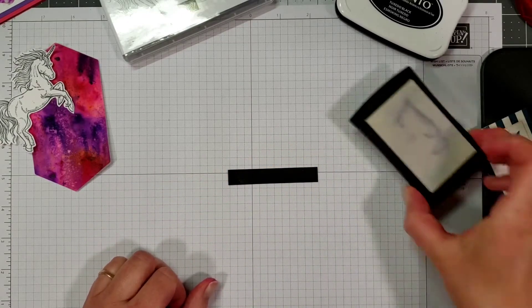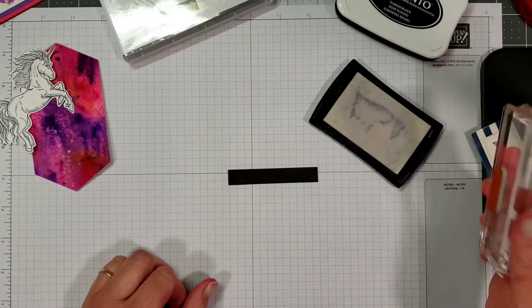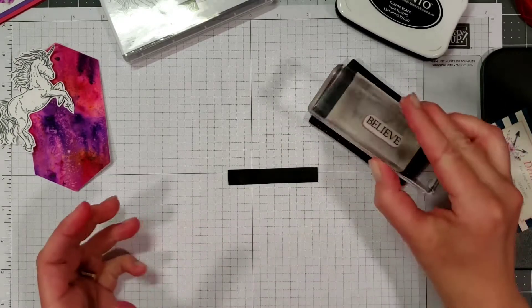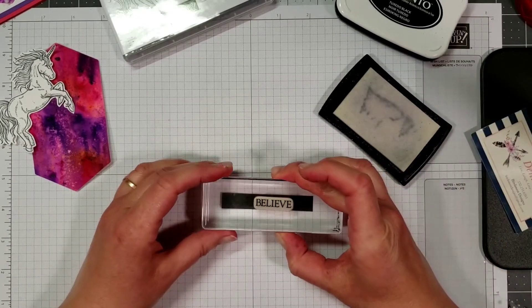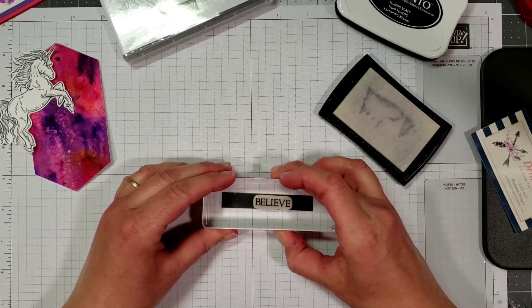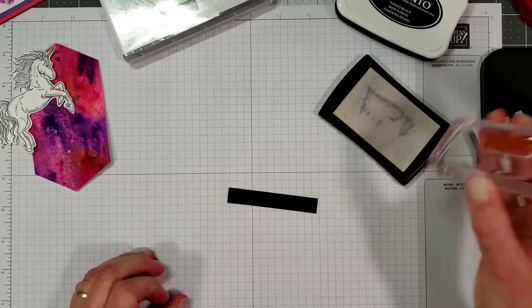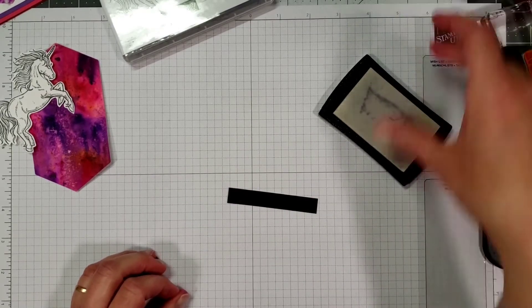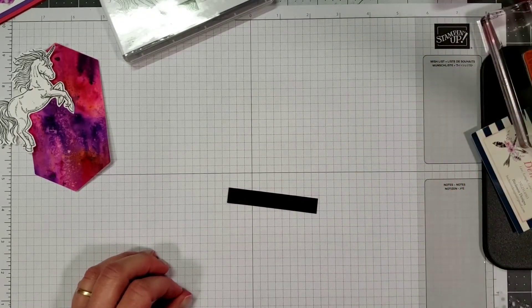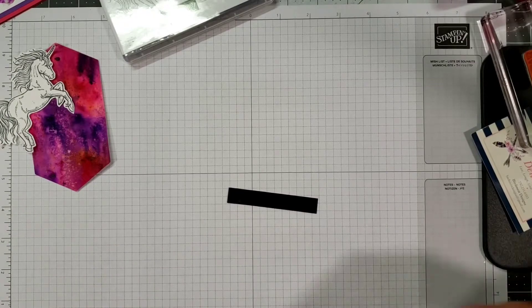Versa mark ink pad and then I'm going to bring in my embossing tray here with some white embossing powder like that.